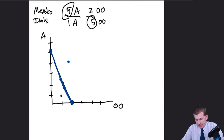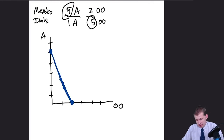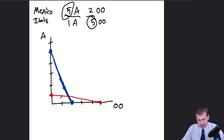That line is called the production possibility frontier — they can produce any combination on that line but can't go beyond it. For Italy, we draw their frontier the same way: Italy could make one avocado or five olive oils, and the line connecting those points is Italy's production possibility frontier. They could do one olive oil and a little less than one avocado, or five olive oils and no avocados.